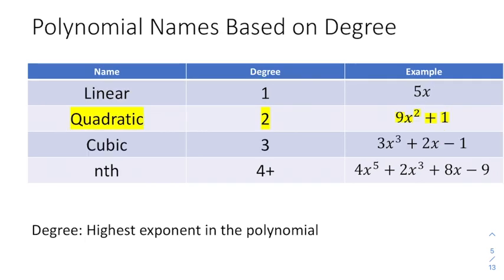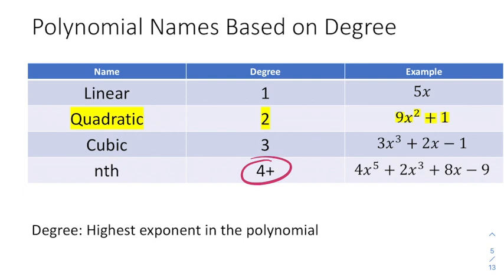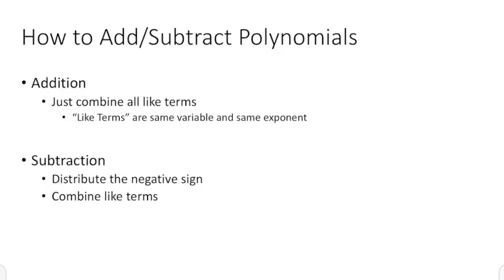We also classify polynomials based on degree. When you don't see an exponent, that means the exponent is really one, and that's called linear. When the highest exponent is two, that's called quadratic — and quadratics are the most important type in this chapter. If the highest degree is three, we call it cubic. Anything beyond four, we start calling it by the numbers, like a fifth degree or a twelfth degree polynomial.